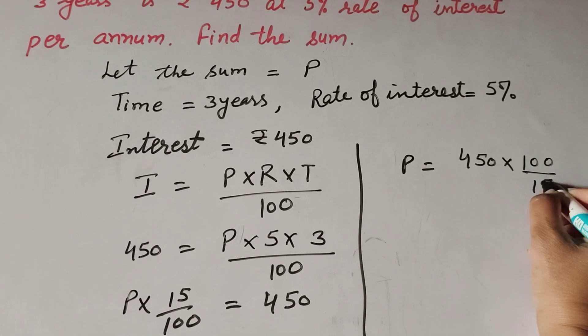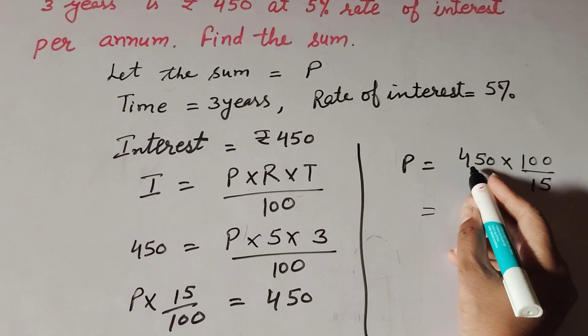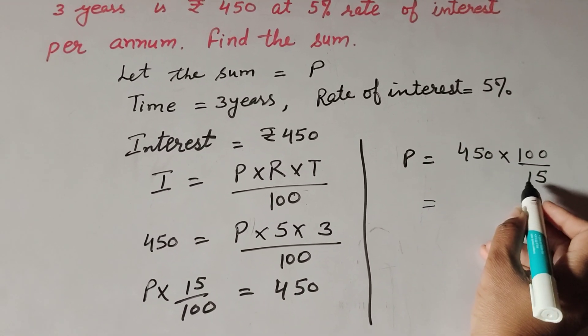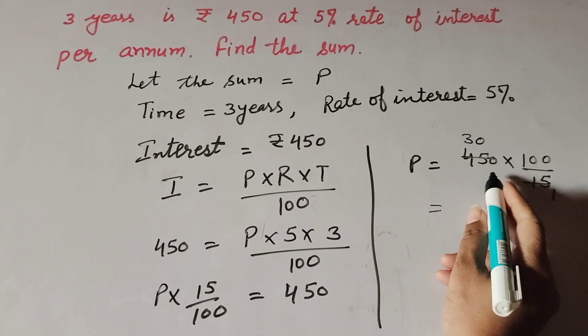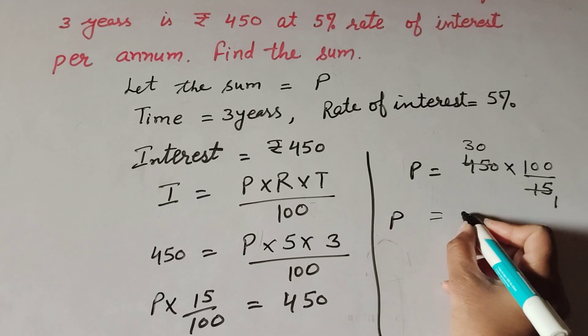450 divided by 15: 15 ones are 15, 30 fifteens are 450, so principal equals 30 × 100 = 3000.